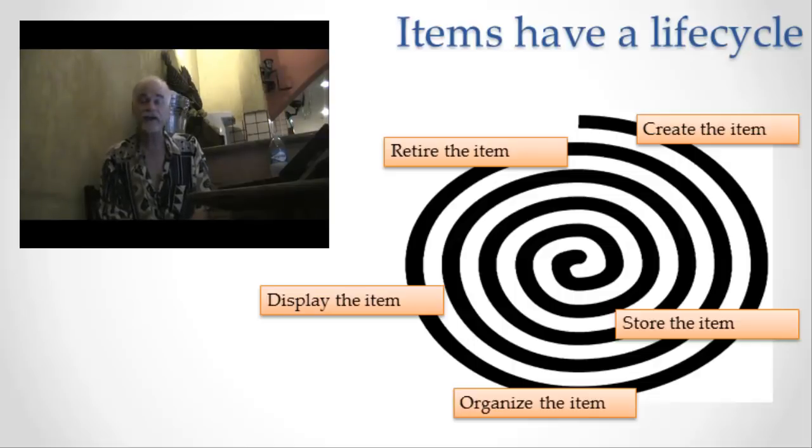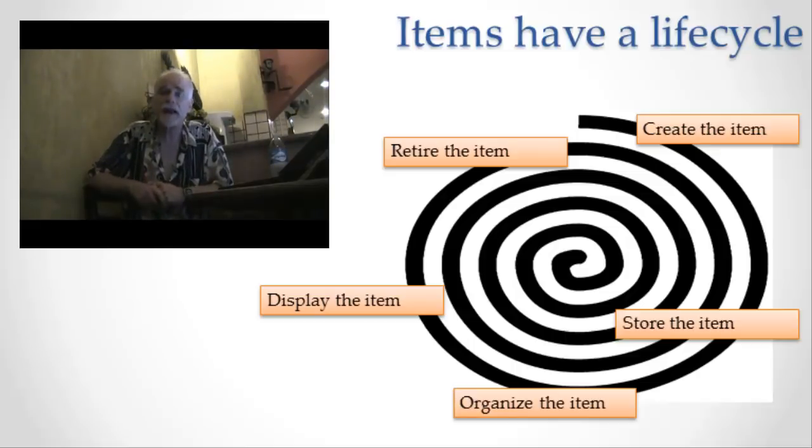The first thing that happens in the life cycle of information items is it's created. The last thing that happens in the life cycle of an item of information is it's somehow retired, deleted, or put off to the side. So let's go through that life cycle. I want you to understand that the life cycle of information is the life cycle of an item.